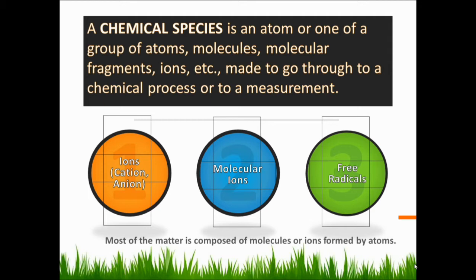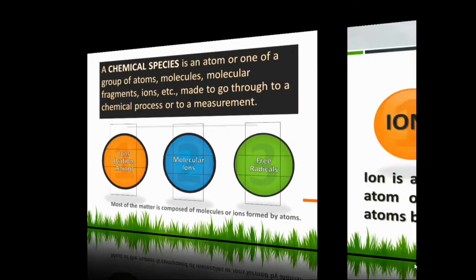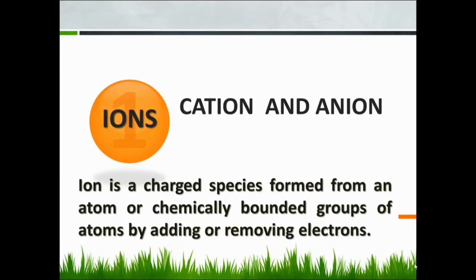Most of the matter is composed of molecules or ions formed by atoms. Chemical species can be divided into three categories: number one, ions — that is cations or anions; number two, molecular ions; and number three, free radicals. An ion is a charged species formed from an atom or chemically bounded groups of atoms by adding or removing electrons.